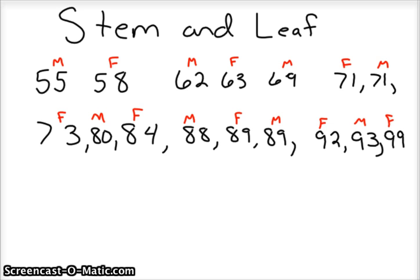And your lowest score was a 55, and your highest score was a 99, and the M and the F stand for male and female. And again, I've completely made this up, so who knows. So we start out at 55%, 58%, 62%, 63%, 69%, 71%, 71%, and on up the line.